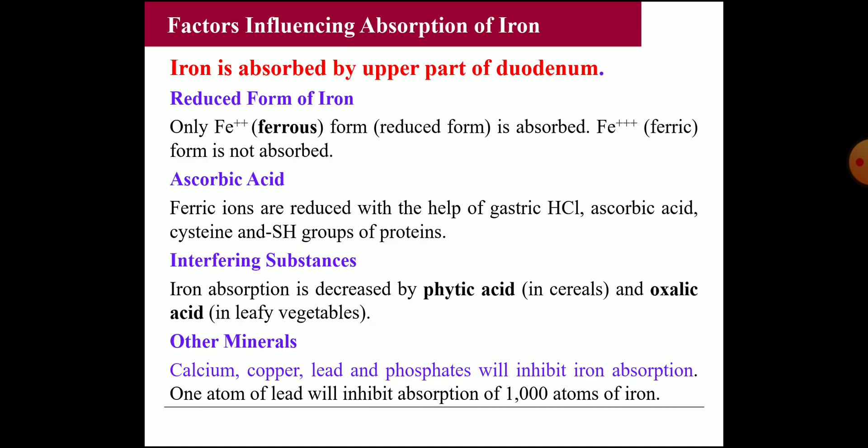Milk is a poor source of iron. Now, regarding factors influencing iron absorption: iron is absorbed in the upper part of the duodenum, and usually only in the ferrous (Fe²⁺) form — not in the ferric (Fe³⁺) form. Factors that increase iron absorption include ascorbic acid (vitamin C), which helps reduce ferric to ferrous with the help of gastric HCl, and the amino acid cysteine along with SH groups of certain proteins. Factors that decrease iron absorption include phytic acid (present in cereals) and oxalic acid (present in vegetables), as well as minerals such as calcium, copper, lead, and phosphate.